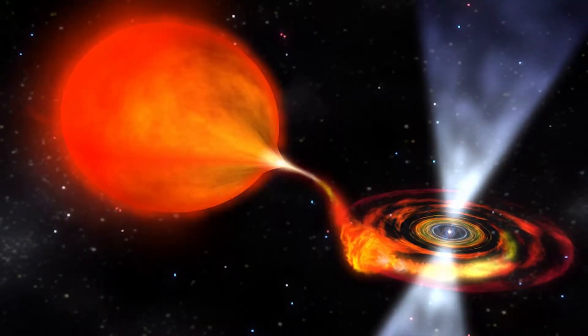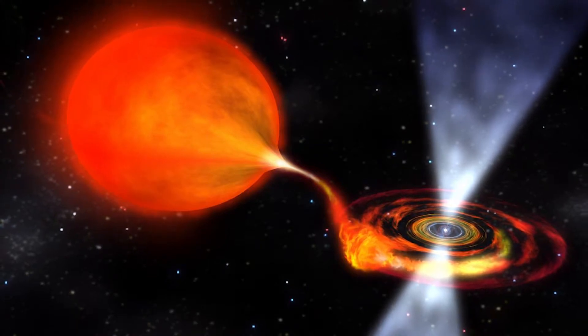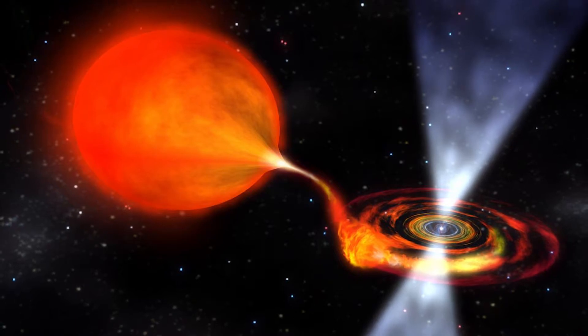X-ray pulsars, or accretion-powered pulsars, are usually in a binary system when a neutron star is in orbit with another stellar companion. Together, they emit energy in the X-ray spectrum.